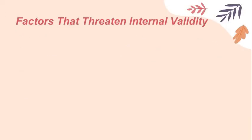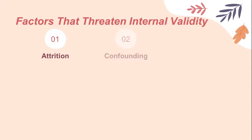Now, factors that threaten internal validity. Here is a list of potential threats to internal validity that should be considered when planning a study. The first is attrition — participants dropping out or leaving a study — which means that the results are based on a biased sample of only the people who did not choose to leave, and possibly who all have something in common, such as higher motivation.